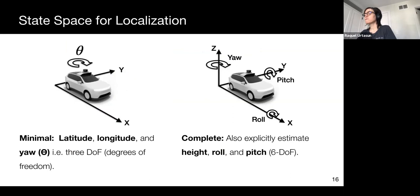There are two main parametrizations of vehicle pose used in SDVs, short for self-driving vehicles. The minimal parametrization has just three degrees of freedom: the latitude, longitude, and the yaw of the vehicle with respect to the map.